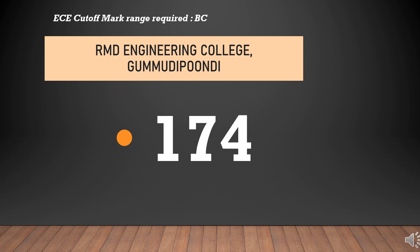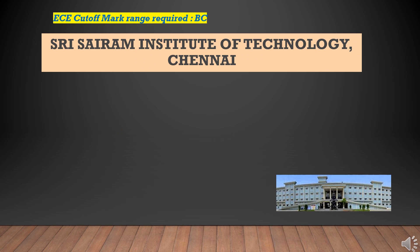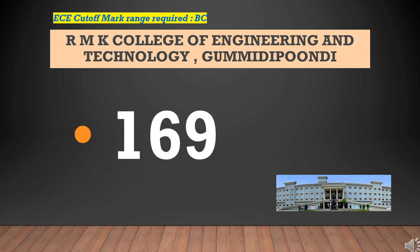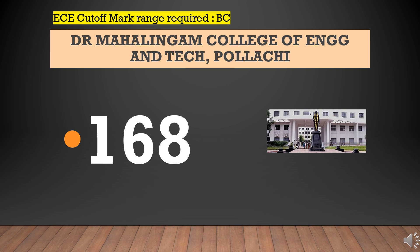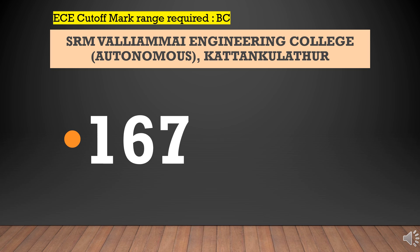RMD Engineering College: Cut-Off Required for ECE BC is 174. Karpagam College of Engineering: Cut-Off Required for ECE BC is 173. Shri Sairam Institute of Technology: Cut-Off Required for ECE BC is 169. RMK College of Engineering and Technology: Cut-Off Required for ECE BC is 169. National Engineering College: Cut-Off Required for ECE BC is 169. Dr. Mahalingam College of Engineering and Technology: Cut-Off Required for ECE BC is 168.